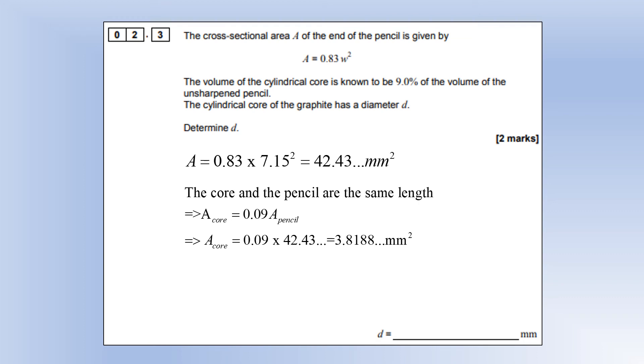The core and the pencil are the same length, so the 9% difference in volume must be to do with the area. We know the core is going to be 9% of the cross-sectional area of the pencil. So we can calculate the cross-sectional area of the core and its circular cross-section. Then we can just use πd² over 4 is the area and solve that to find D.